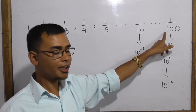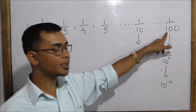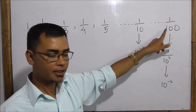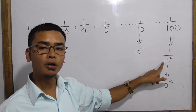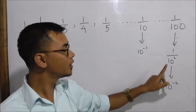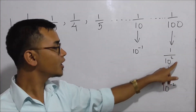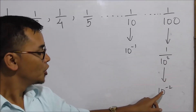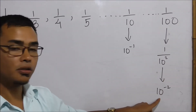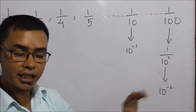1 by 100 — 100 is 10 into 10, 10 into 10 is 10 squared. But 10 squared is the inverse rule: 10 inverse 2.